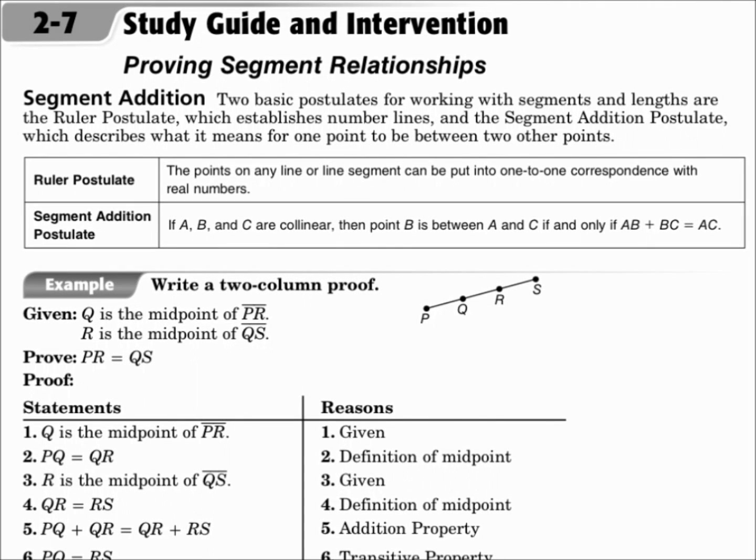This is lesson 2.7, Proving Segment Relationships. The objectives are to write proofs involving segment addition and to write proofs involving segment congruence.